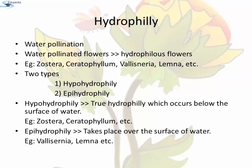Vallisneria is epihydrophilic in nature. It is a submerged aquatic plant and is dioecious in nature; the flowers are unisexual. The male flowers occur in clusters on short stalks of the male plant. When they mature, they get detached from the stalk and reach the surface of the water. On the surface, the male flower opens up and the stamens are exposed. The female flower arises singly on long stalks from the female plant. When it matures, the pedicle elongates and reaches the surface of the water. The floating male flowers gather around the female flower and come in contact with it on the surface of the water. The pollen grains are deposited from the stamens to the stigma of the female flower. Afterward, the perianth closes and the female flower sinks down by coiling of the pedicle, and the fruit develops under the water.